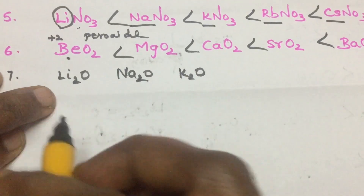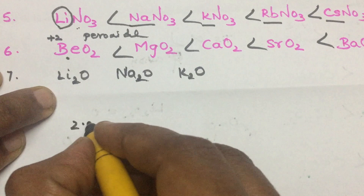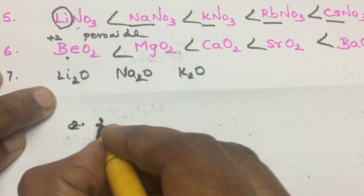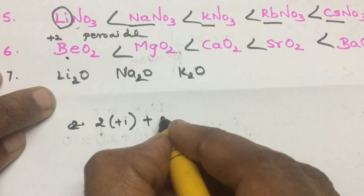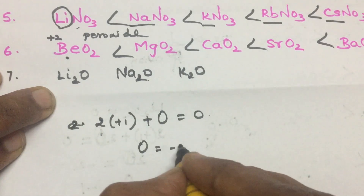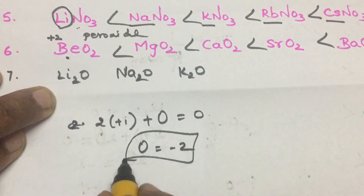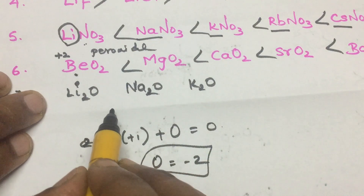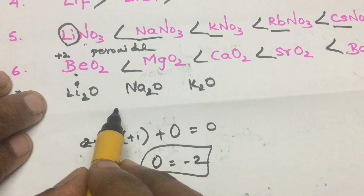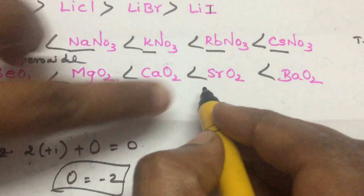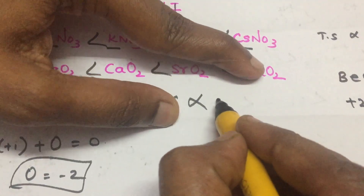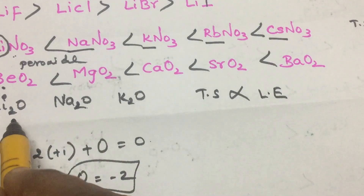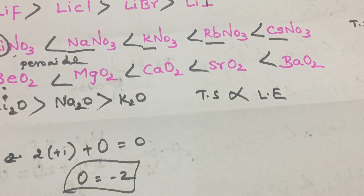For L₂O, lithium is +1, so 2(+1) + oxygen = 0, giving oxygen an oxidation state of minus 2. This is a normal oxide. Being a normal oxide, it is a simple ionic compound, so thermal stability is directly proportional to lattice energy.